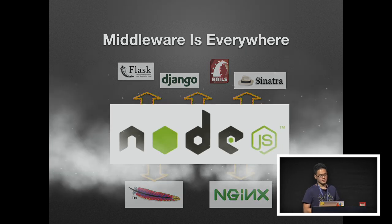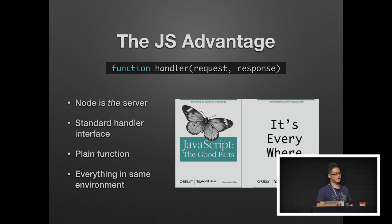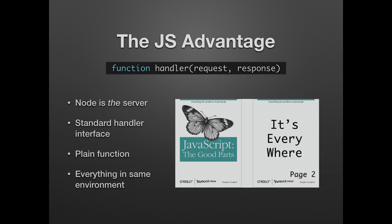And this is where Node comes to the rescue. Ever since Ryan Dahl invented Node, Node has had an important advantage: Node itself is already the web server. With the powerful libuv library that allows Node to perform asynchronous I/O operations, and the natural asynchronous programming style in JavaScript, Node itself can be run as a powerful, high-performance web server without the help of conventional servers such as Apache. Node also, by default, comes with a standard handler interface defined simply as a plain function, and all the HTTP and application code can be run in the same environment — namely in JavaScript.